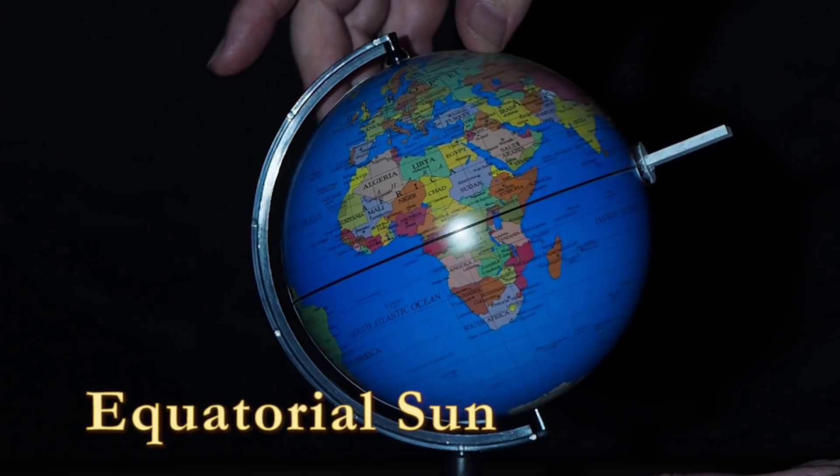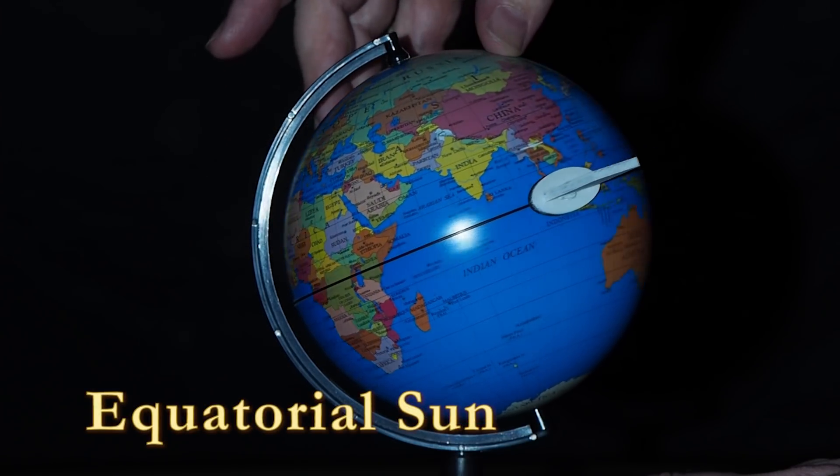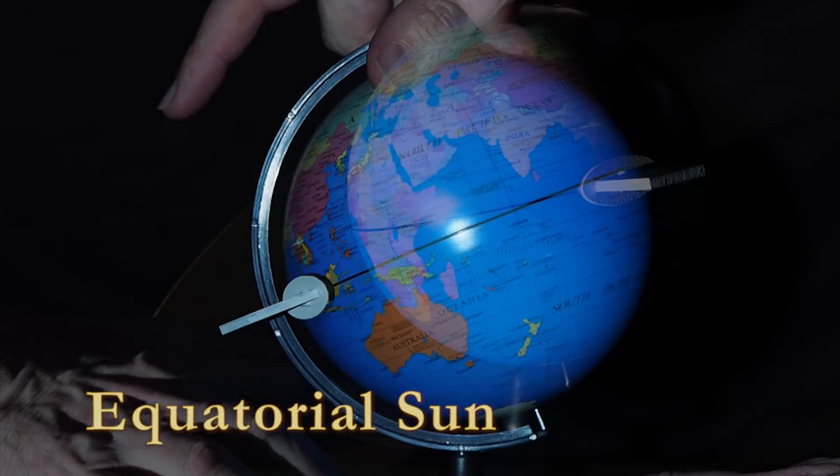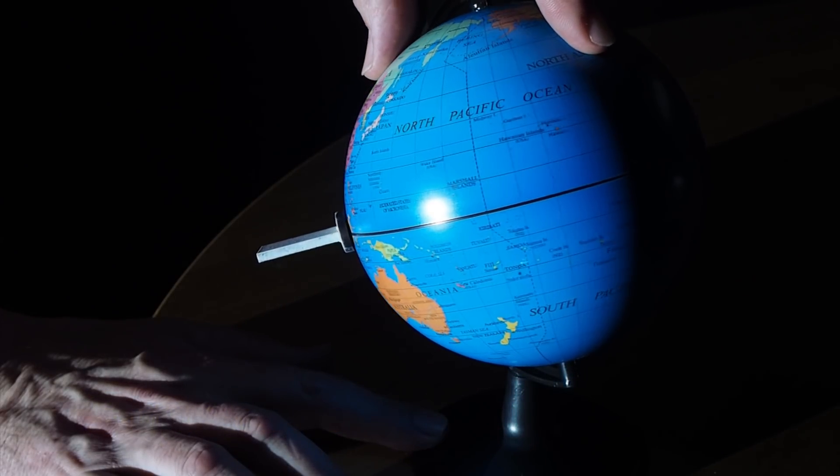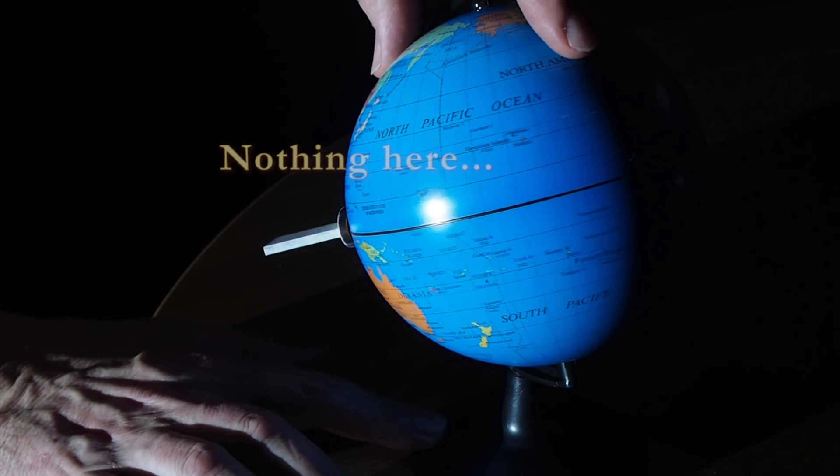Looking at the sun's point of view, the equator is a straight line. Objects only cast shadows to the east or west during the equinox and never north or south, thus showing the sun is travelling in a straight line over the equator.